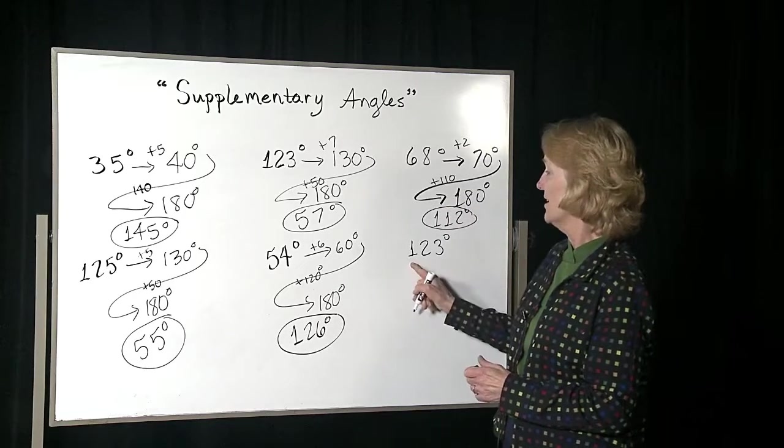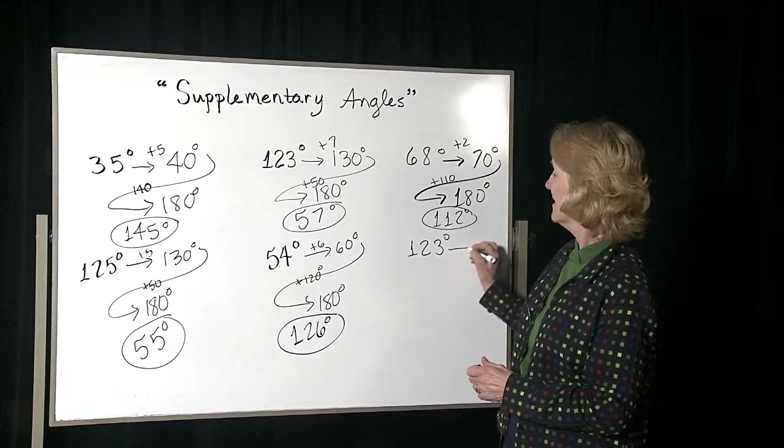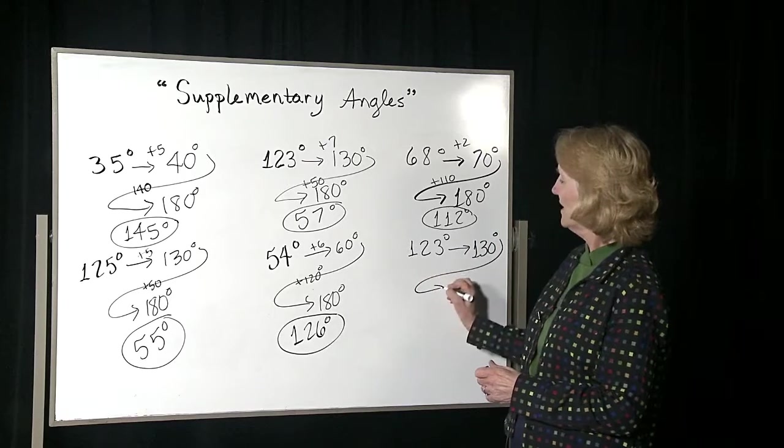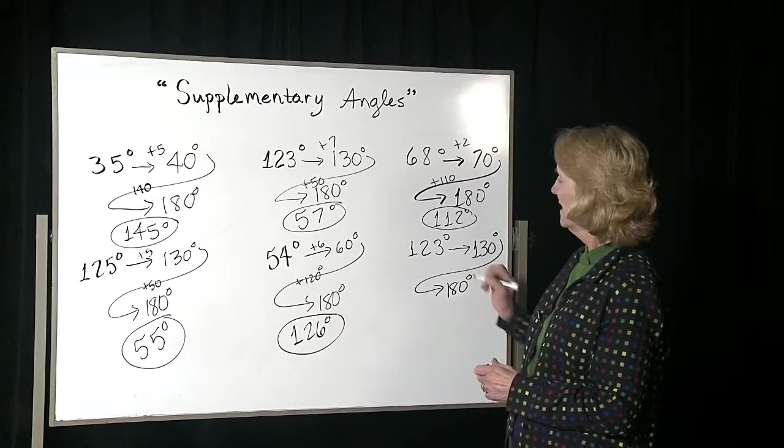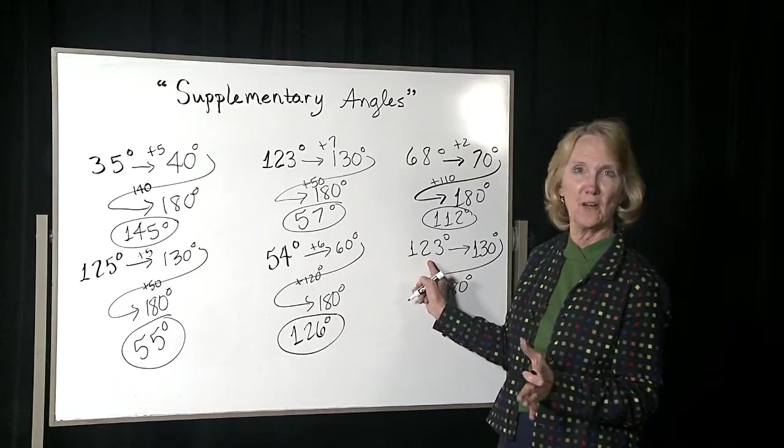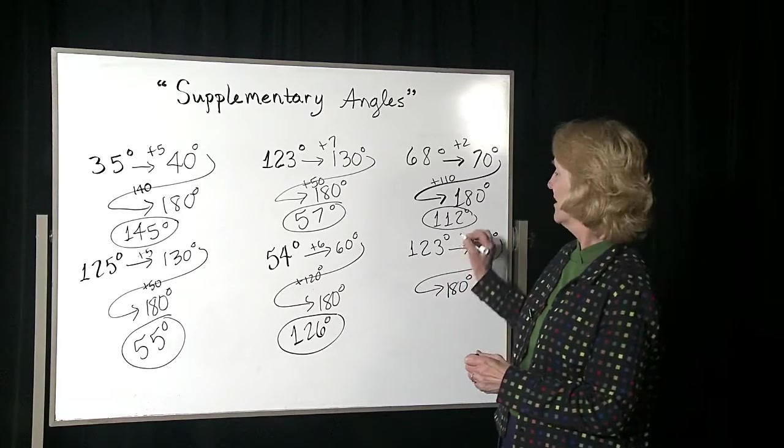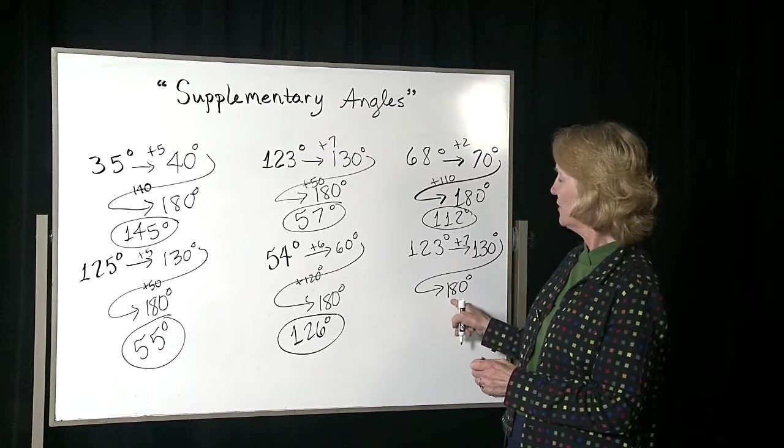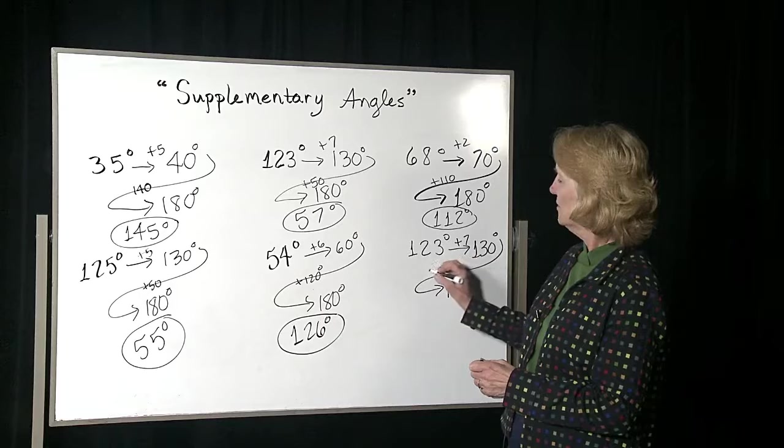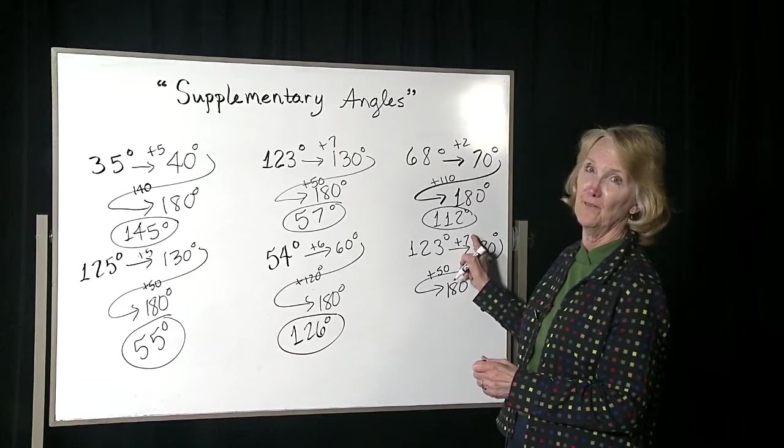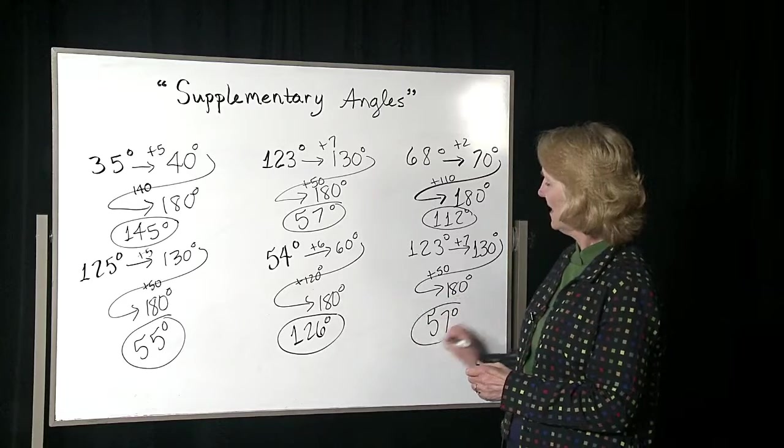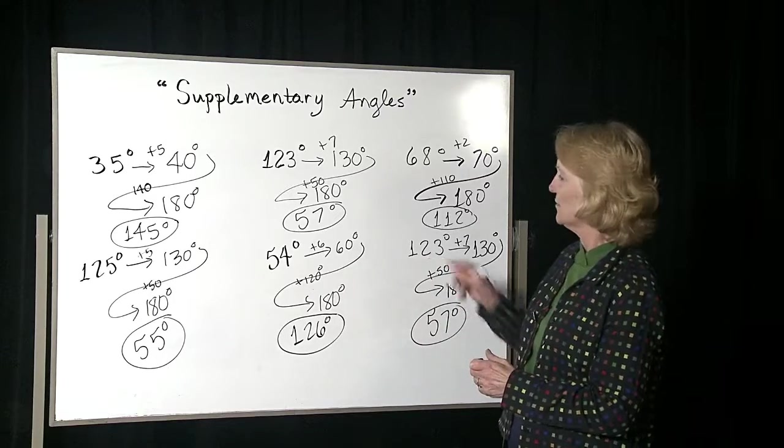Next one, if you have 123, go to the next multiple of 10, and then to 180. What do you need to go from 123 to 130? You needed 7. Once you're at 130, how do you get to 180? You need to add 50. So you add 50 and 7, so you'd get a total of 57. That's the supplementary angle for this.